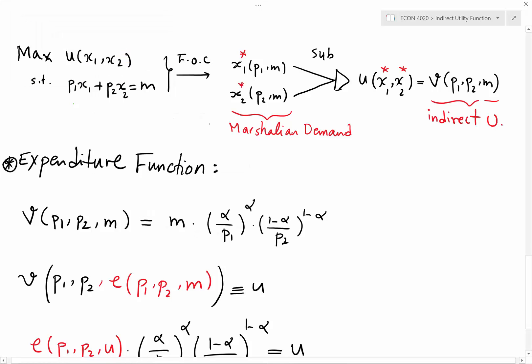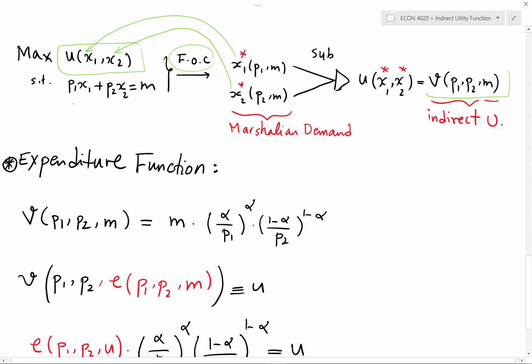In the previous video I talked about how we can derive an indirect utility function from a given direct utility function. If we have a direct utility function and maximize it subject to our budget constraint, write the Lagrangian and take the first order conditions, the result is x1 and x2, which are the Marshallian demand. If we substitute x1 and x2 back into the direct utility function, the result is an indirect utility function — a function of prices and income.